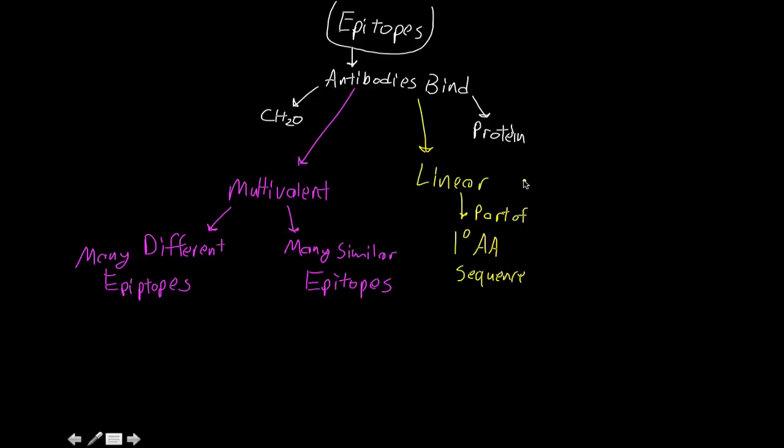The other type is discontinuous epitopes. This is the tertiary level amino acid structure, the peptide folded into that conformation. The important thing is that there is a lot of variation between the different types of epitopes.